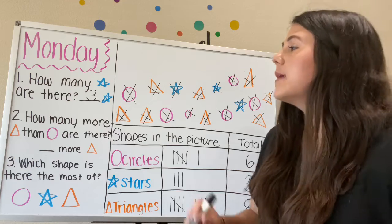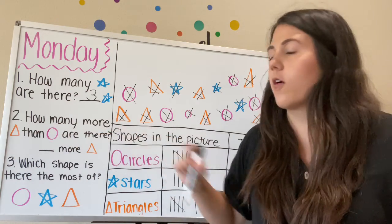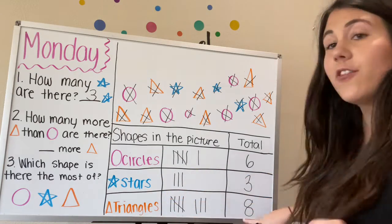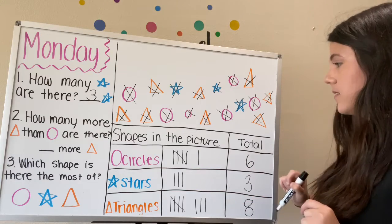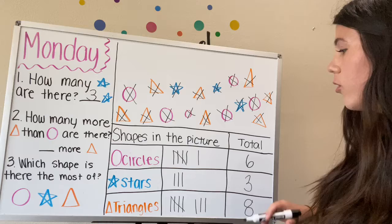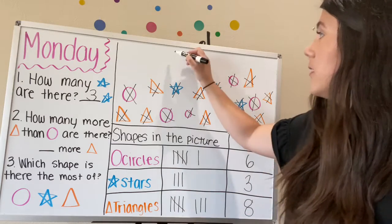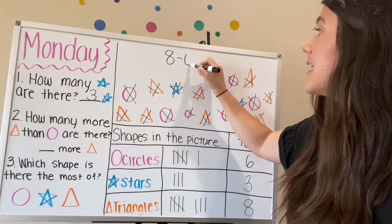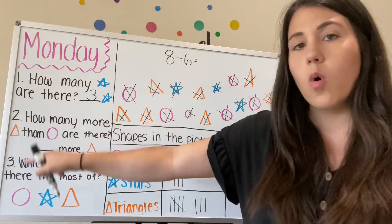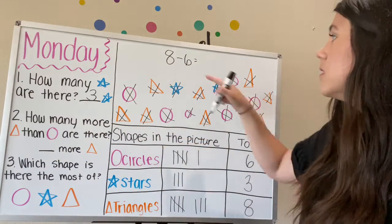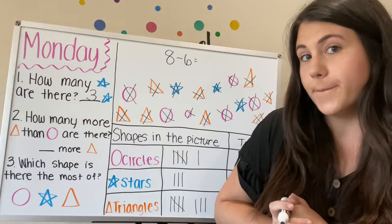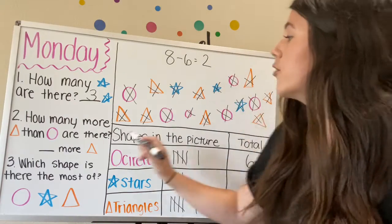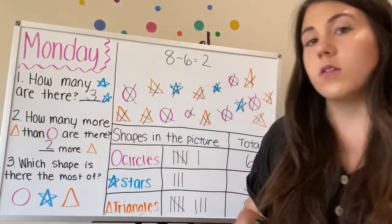Number two, how many more triangles than circles are there? So we're going to look at our triangles. We have eight triangles. How many circles do we have? Six. So we need to make that a subtraction problem. So we have our bigger number, eight triangles. And we had six circles, so we're going to subtract six. And that will tell us how many more triangles there are than circles. So what is eight minus six? Two. Yes. So there are two more triangles than circles.